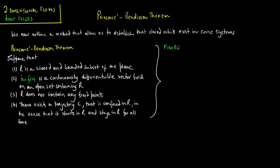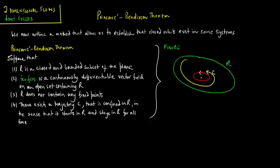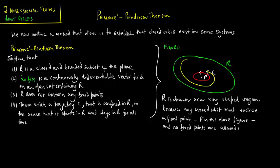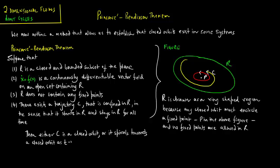Let us plot a figure and visualize some of this. R is drawn as a ring-shaped region because any closed orbit must encircle a fixed point, denoted as P in the figure, and no fixed points are allowed in R. Then, either C is a closed orbit or it spirals towards a closed orbit as T tends to infinity. In either case, R contains a closed orbit, as shown in red in the figure.